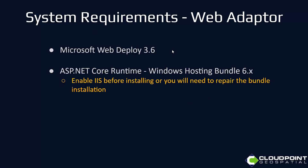Additional components that need to be installed at 11.1 are Microsoft Web Deploy 3.6 and the ASP.NET Core Runtime Hosting Bundle 6 — whatever the latest version is. If you enable IIS before installing this, or you need to — you need to enable IIS before installing it, or you'll need to repair the bundle. Just install IIS first, then install this if you're doing a brand new deployment.